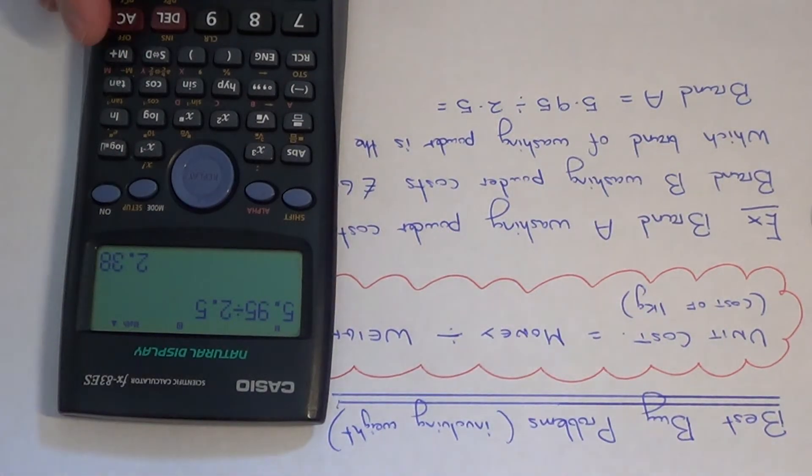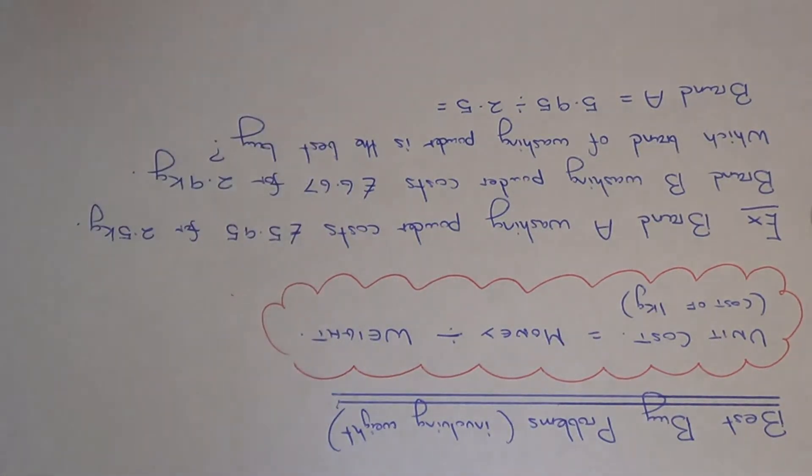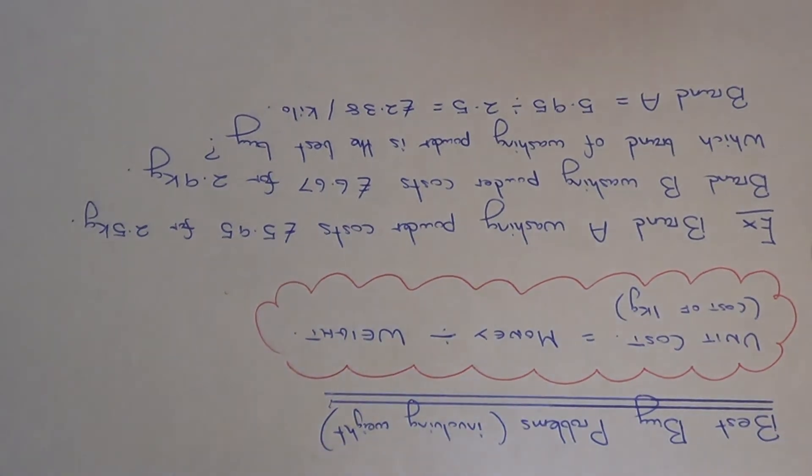So this gives £2.38. So that's per kilo. So we just need to repeat this now for brand B.